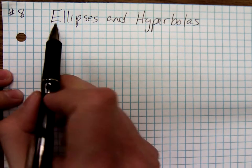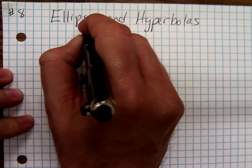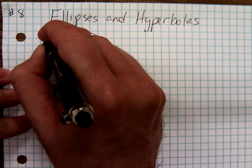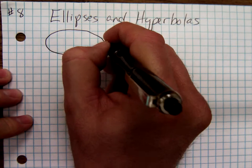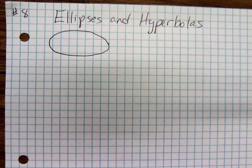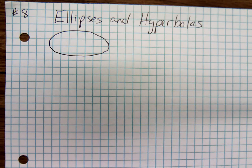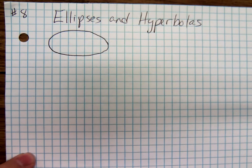An ellipse is sort of a flattened circle — it might be more horizontal or it might be more vertical. Most people have heard the phrase 'elliptical' before, so most people have an idea of what an ellipse looks like. A hyperbola, however, not all people know what that looks like.